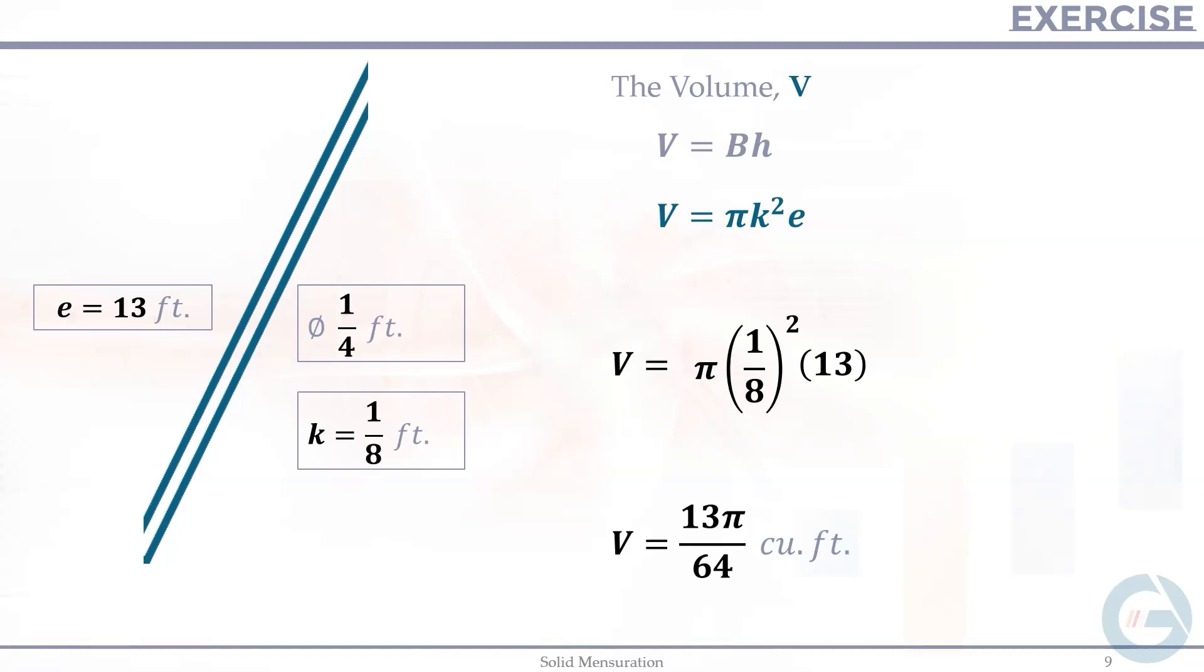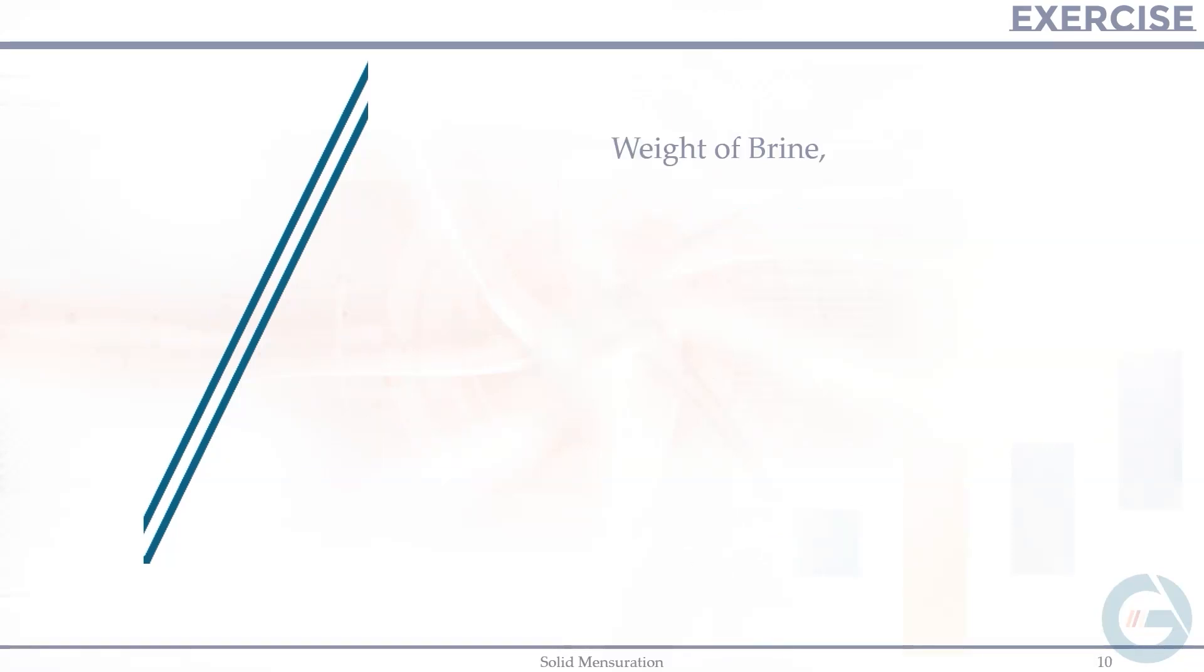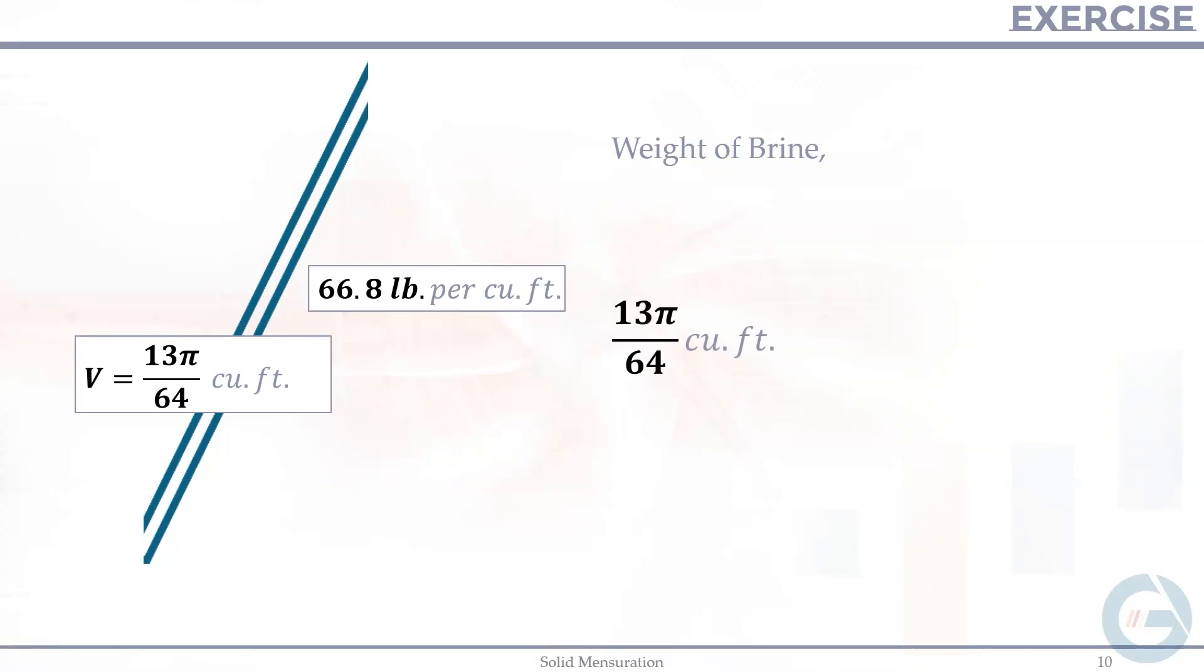Next is the weight of the brine. So this pipe has a volume 13 pi over 64 cubic feet. And given to the problem that the brine weighs 66.8 pounds per cubic foot. And simply multiply the volume to the rate.